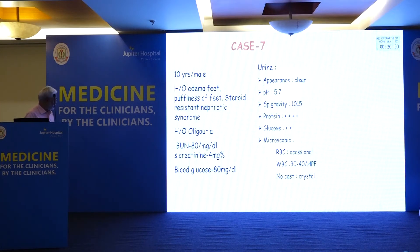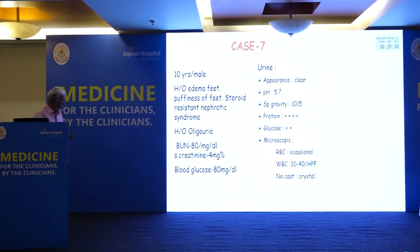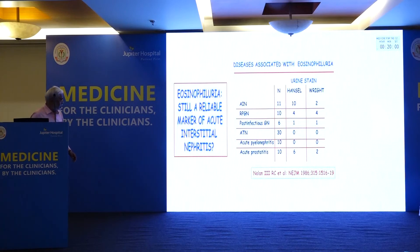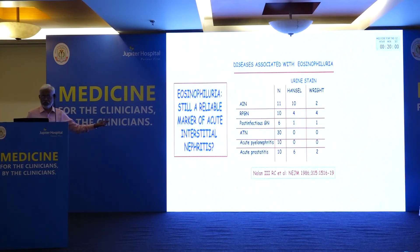Case: a 10-year-old male with nephrotic syndrome had increased blood urea nitrogen and creatinine — acute renal failure in nephrotic syndrome. Proteinuria was 4+, WBC 30 to 40, but no RBCs — possibility suggesting interstitial involvement. Eosinophils in urine may help diagnose drug-induced interstitial nephritis, though a 2020 study said not to rely on eosinophils alone to diagnose interstitial nephritis.